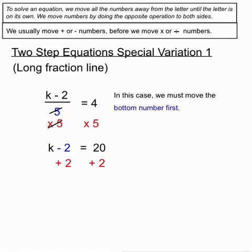It's a plus 2. We'll do that to both sides of the equation. And on the left hand side the minus 2 and the plus 2 will cancel each other out. That leaves our letter k on its own. On the right hand side 20 plus 2 is 22. So in this variation the key thing is we choose to move the bottom number first because the bottom number is considered to be affecting that whole top and so that's the key difference. We move the bottom number first when we have a long fraction line.